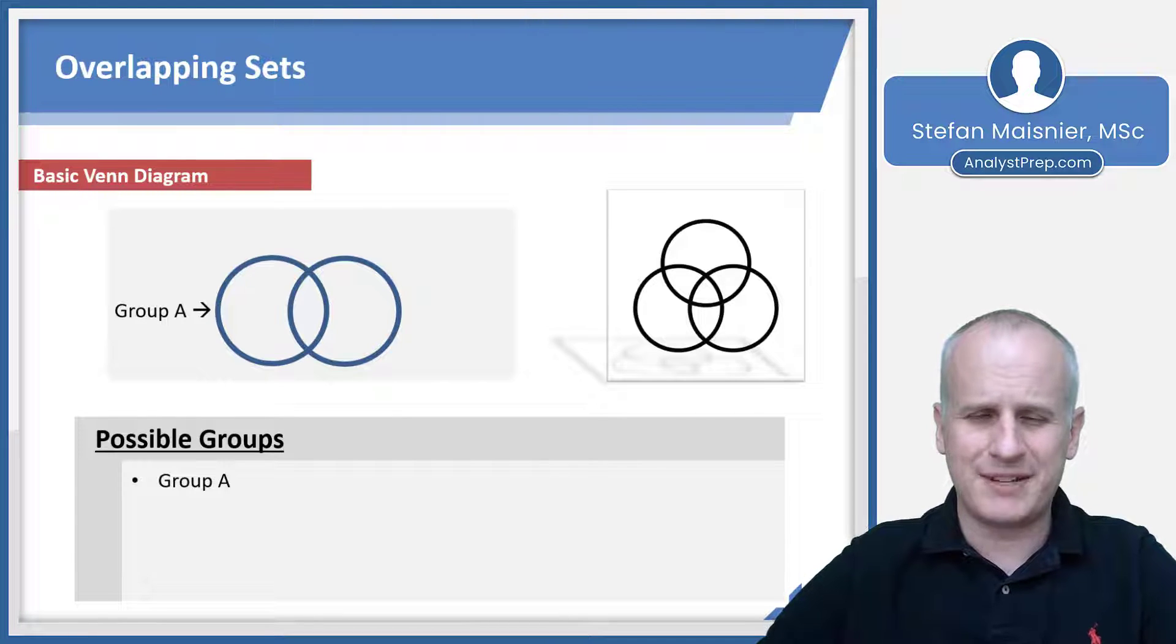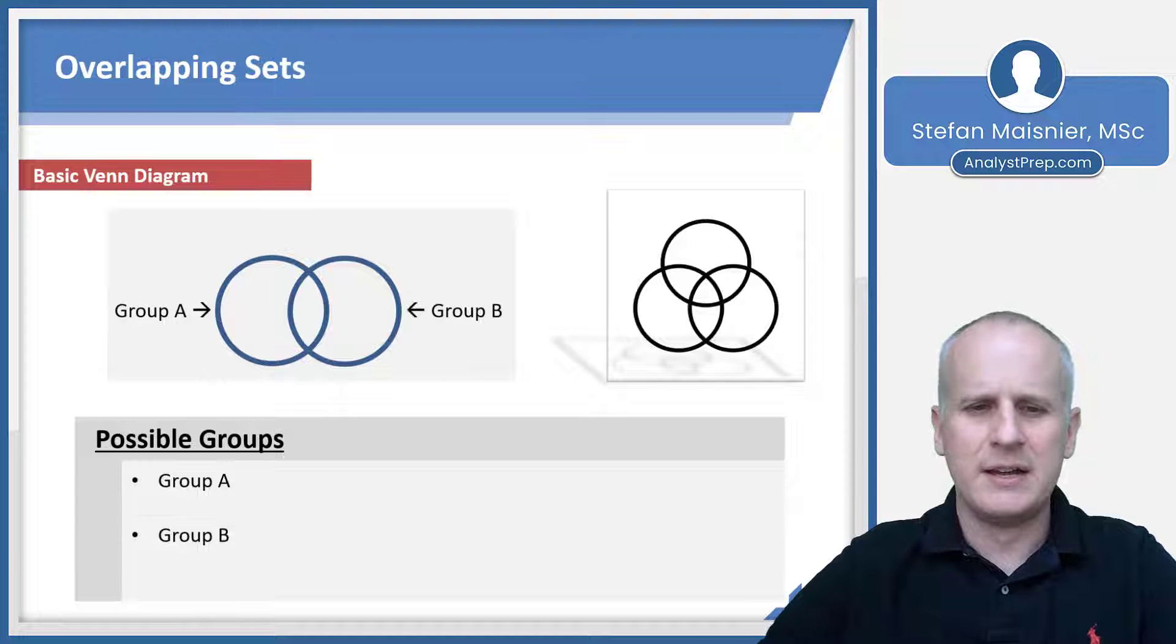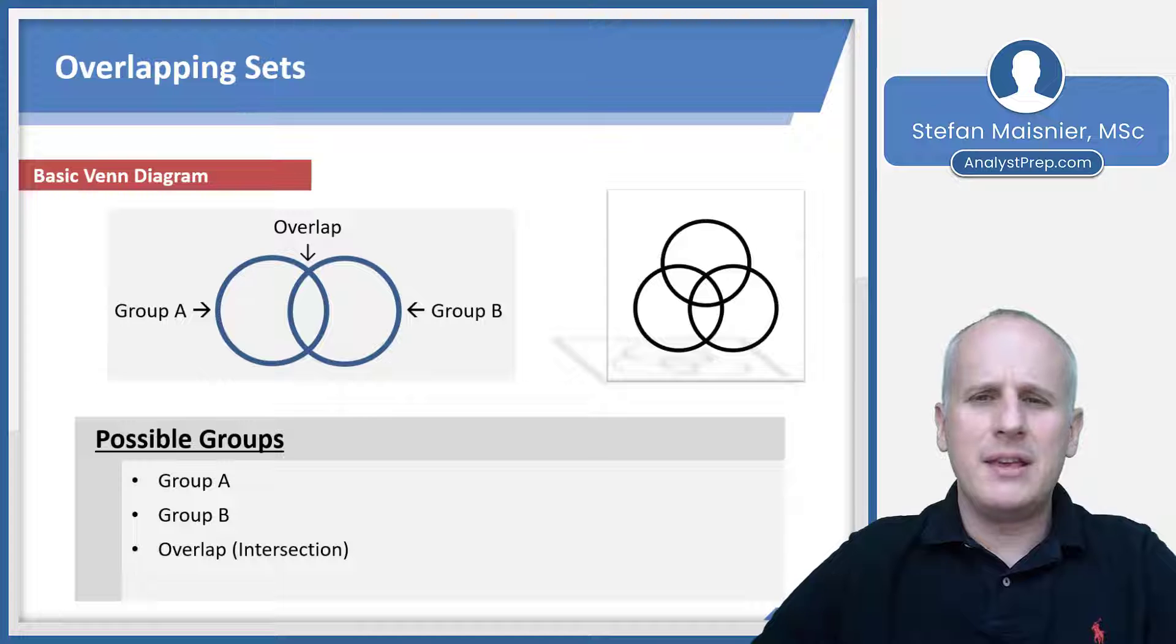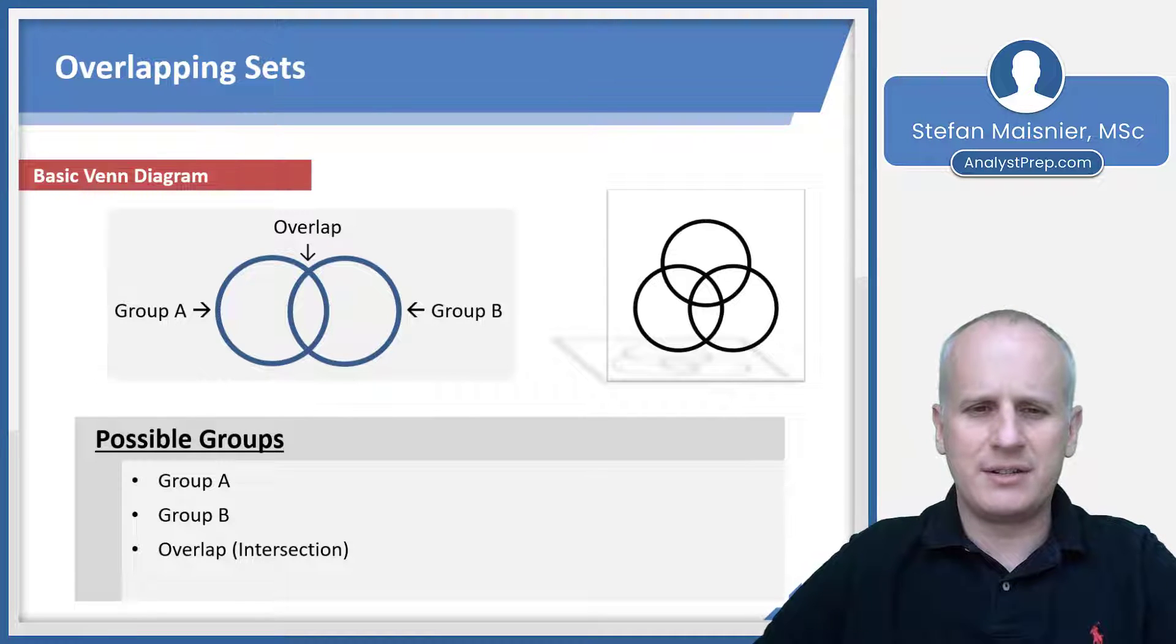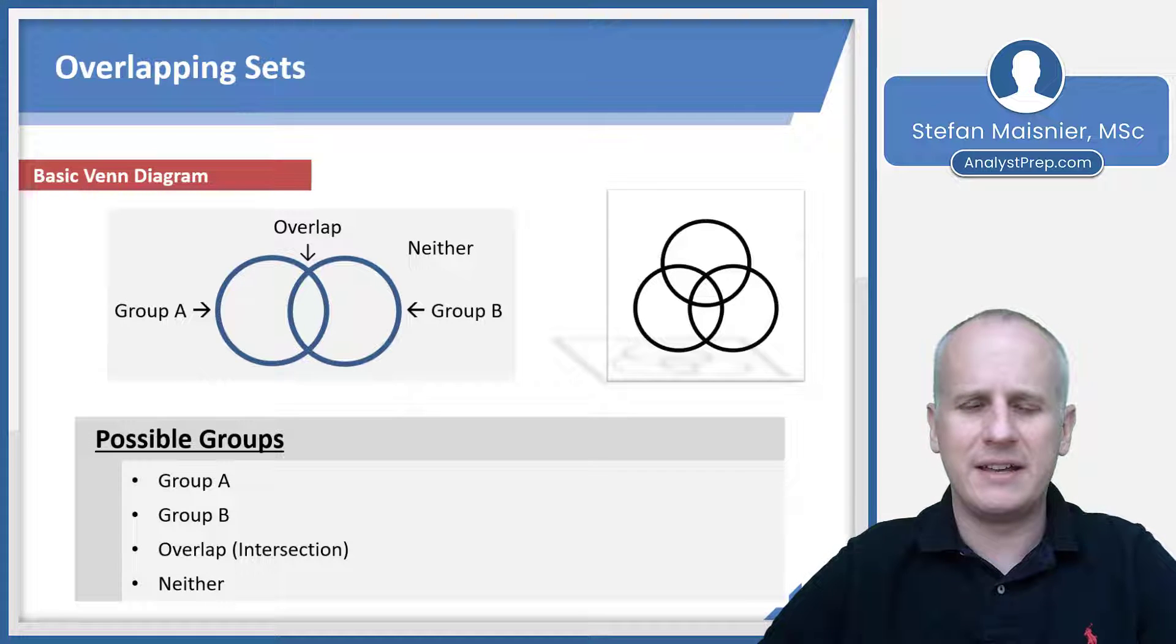Group A is represented by the circle on the left hand side. Group B is illustrated by the circle on the right hand side. The overlap or what is technically known as the intersection is the space in between the two circles for group A and group B, and those are individuals or items that are categorized as both A and B simultaneously. But you also could have individuals or items that are neither part of group A nor part of group B, but are included in an overall larger total. So you have to consider your neither as well.